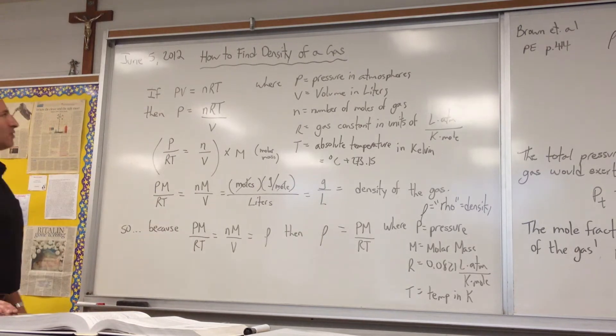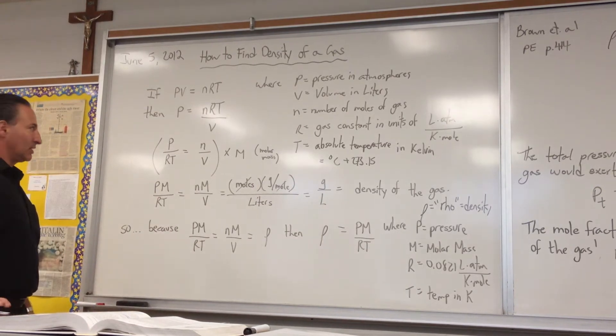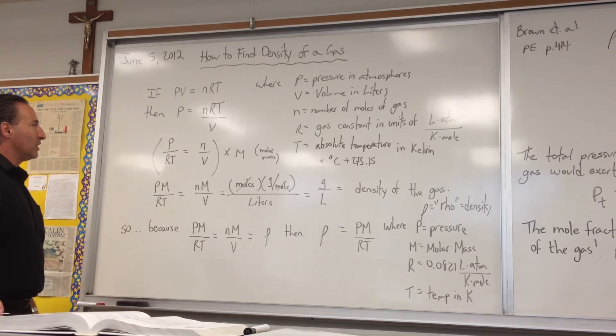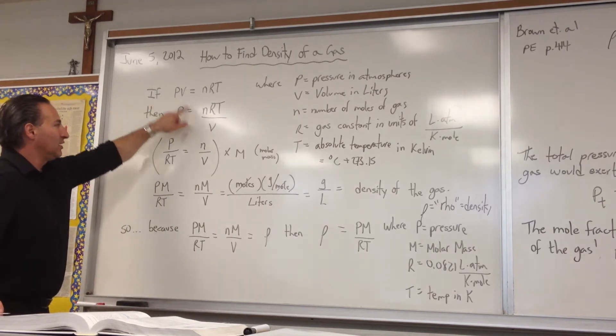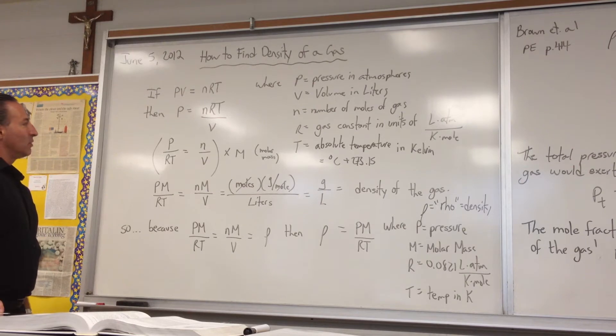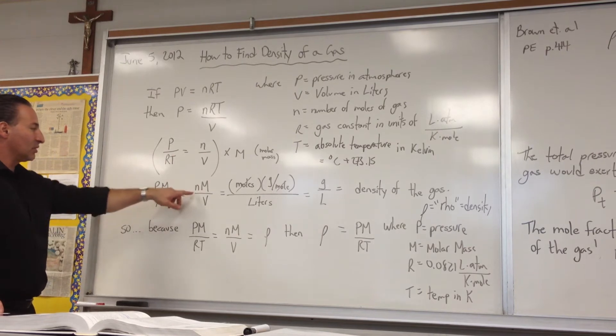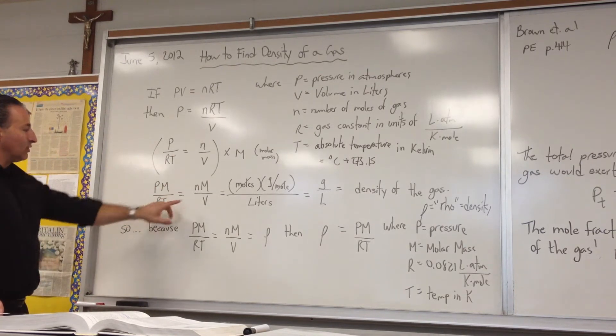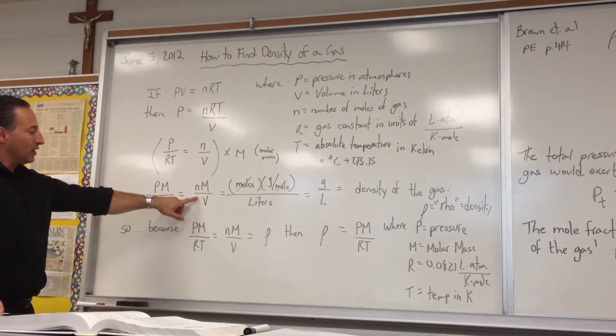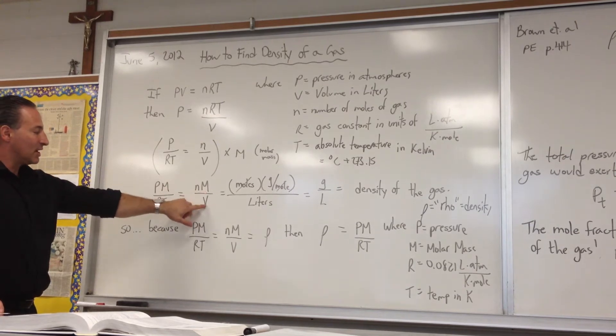To find the density of a gas, we start from the ideal gas law PV equals nRT, and we solve for P by transposing the variable V. Then we multiply both sides of the equation by molar mass, and we get PM over RT is equal to nM over V. If you look at the units of nM over V, where n is the number of moles, M is the molar mass, V is the volume of the gas, you'll see that moles cancel.